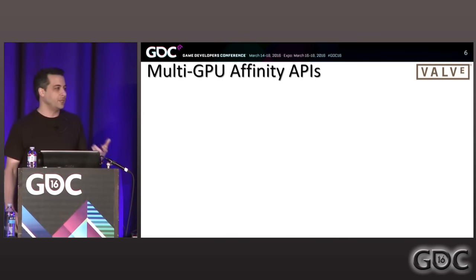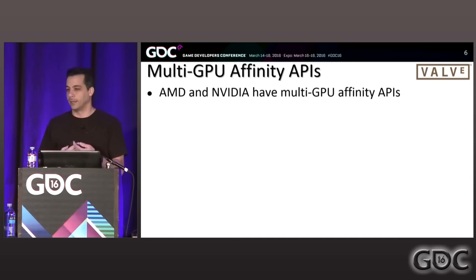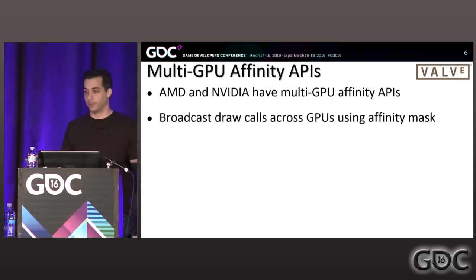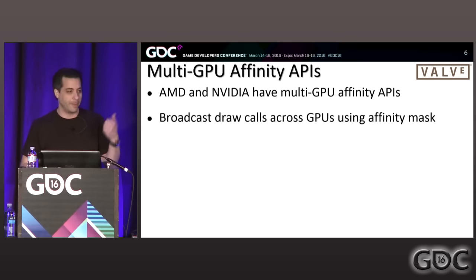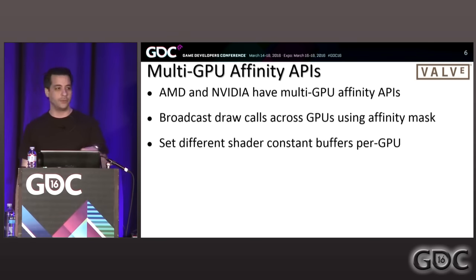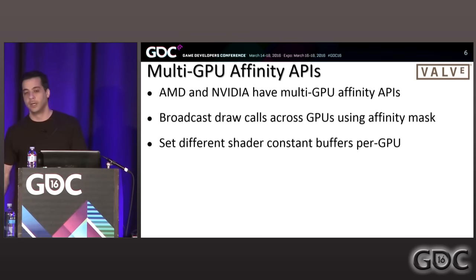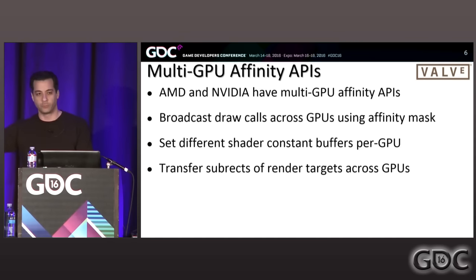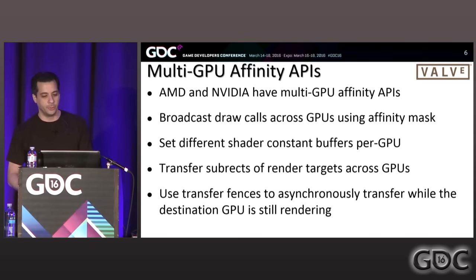There are two multi-GPU affinity APIs — AMD and NVIDIA each have their own, but they accomplish the same goals. There's an affinity mask with a bit for each GPU. You set your mask and make draw calls, which get broadcast to all GPUs with their bit set. You can set constants differently per GPU — different constant buffer contents or handles — to achieve stereo rendering. There are also API calls to transfer sub-regions of render targets across GPUs and transfer fences so you can asynchronously do that transfer while the destination GPU is rendering something else.